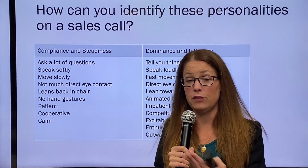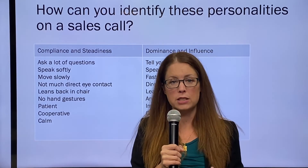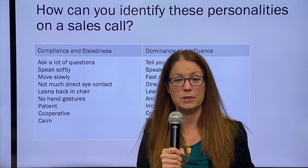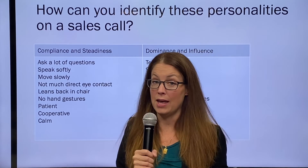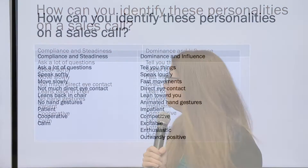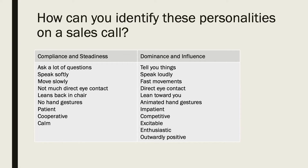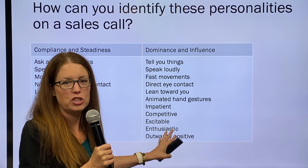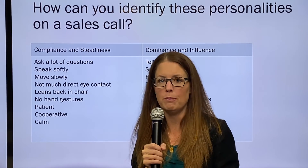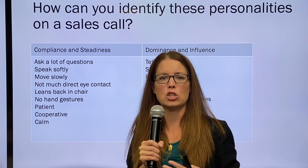Dominance and Influence types will tell you things — they speak loudly, make fast movements, have direct eye contact, lean towards you, use animated hand gestures, and tend to be more impatient, competitive, excitable, enthusiastic, and outwardly positive. If someone comes in aggressive or cursing the minute you get on the phone, that's probably a D or an I. C's and S's are more likely to feel a little unsafe — they're slower to speak and respond and don't always know exactly what they want to say.